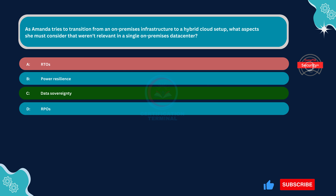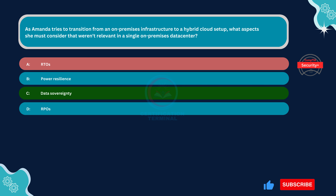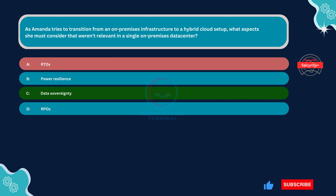Option A, RTOs, is incorrect. Recovery time objectives, RTOs, refer to the maximum acceptable downtime for restoring services after a disruption. While RTOs are essential considerations in disaster recovery planning, they are relevant in both on-premises and hybrid cloud environments. Therefore, RTOs are not specific to hybrid cloud transitions and do not differentiate between the two scenarios.